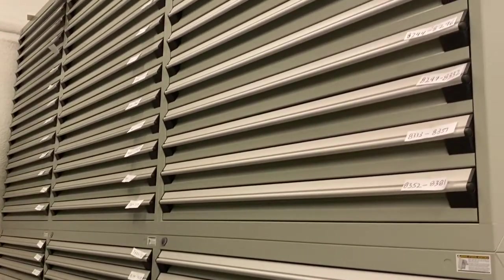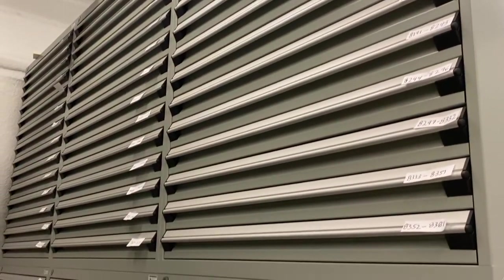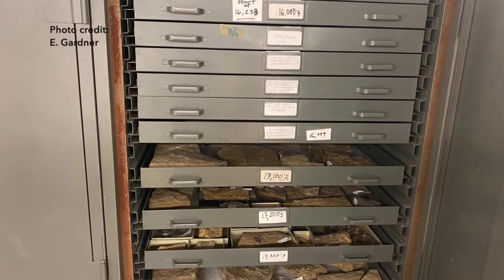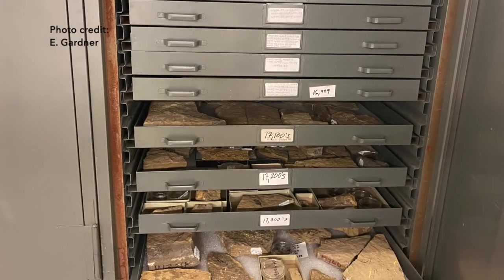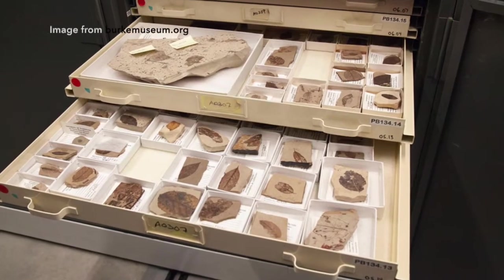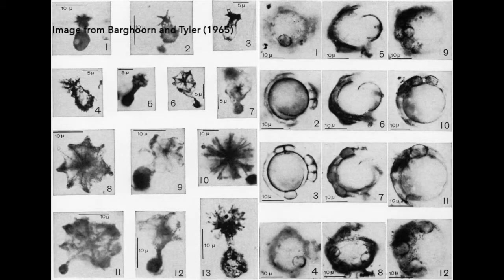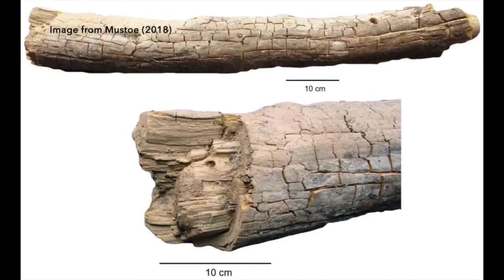Within the paleobotanical collection we have tens of thousands of specimens. These specimens come from all places on earth and from almost all geologic time. Some of our oldest specimens are around one to two billion years old, and some of the youngest are from after the last glaciation, roughly about 10 to 20,000 years old.